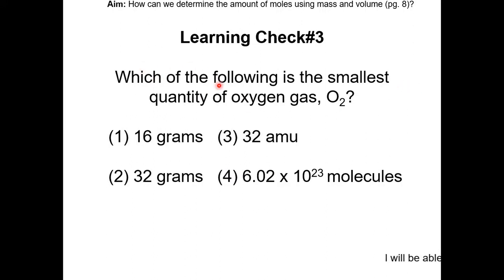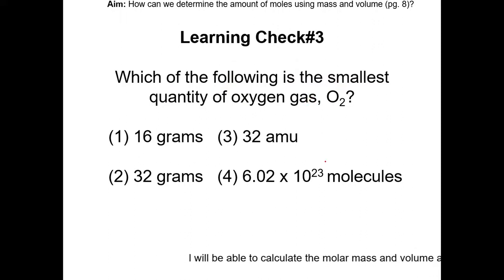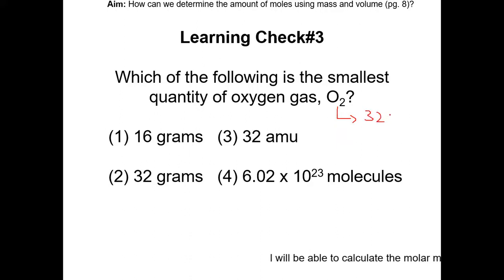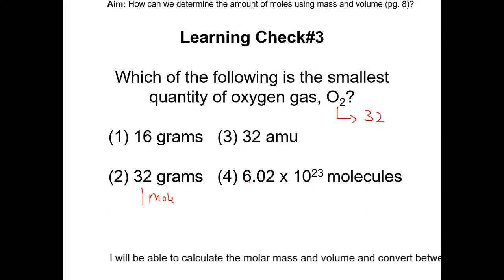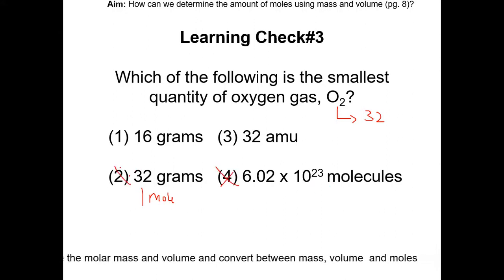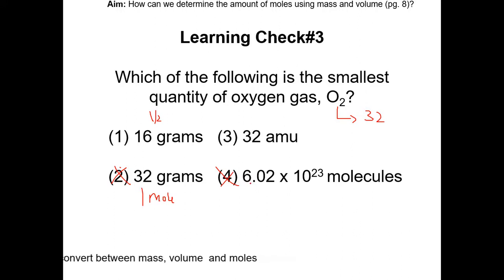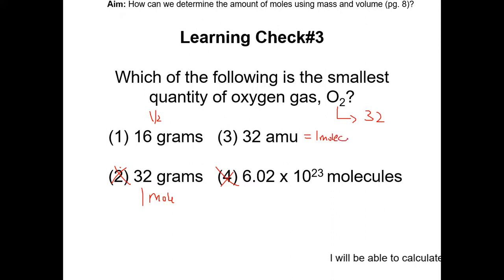Learning check number 3: which of the following is the smallest quantity of oxygen gas? Pause the video and resume once completed. One way to figure this out is to convert everything to the same unit. The GFM of O2 is 32 grams per mole, so 32 grams of O2 is 1 mole. Choices 2 and 4 have the same quantity because 1 mole is 6.02 × 10²³ molecules. 16 grams is smaller than 32 grams, so that would be half a mole. 32 AMU is the formula mass of one O2 molecule — so that is just one molecule. The answer is choice 3, because that is the smallest quantity.